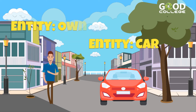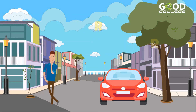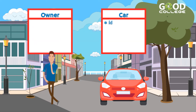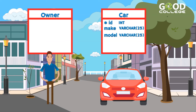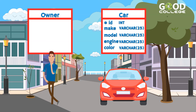Note that we have two entities: car and owner. Car has: ID — the ID stores a whole number such as 1, 2, so it is defined as Int; Make — stores a short chain of characters such as Ford, Nissan, Porsche, so it is defined as Varchar with max 25 characters. The same applies to model, engine, color, and so on.